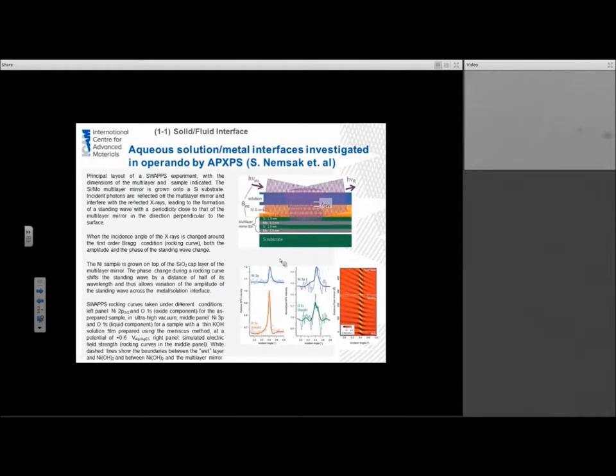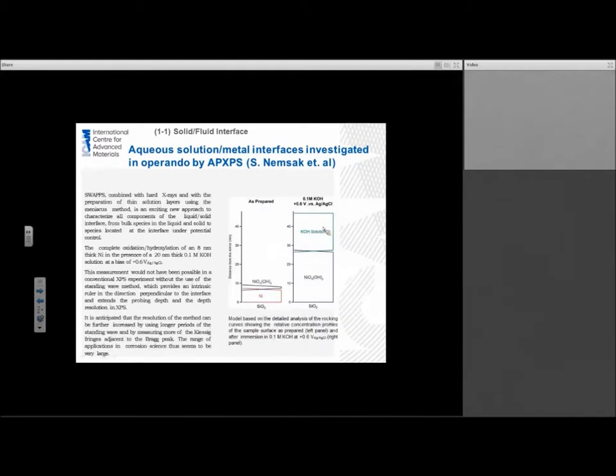If we take a look at this example, we've got a silicon molybdenum and silicon oxide substrate in which we are building on some type of reaction. In this case we have pure nickel, and what we are doing is we are exposing this to an environment, in this case a potential, and we are growing either an oxide or oxide films. SWAPS when combined with hard X-rays and the preparation of a very thin solution layer is an approach that characterizes the components of the liquid-solid interface with bulk species in the liquid and solid species located at the interface under potential control.